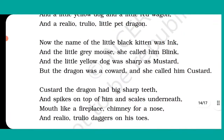In the second stanza, the poet gives the names of all the animals tamed by Valinda. The name of the black kitten is Ink, the name of the grey mouse is Blink. The little yellow dog had a yellow color so she calls him Mustard. And the dragon, who was a weakling, was called Custard.